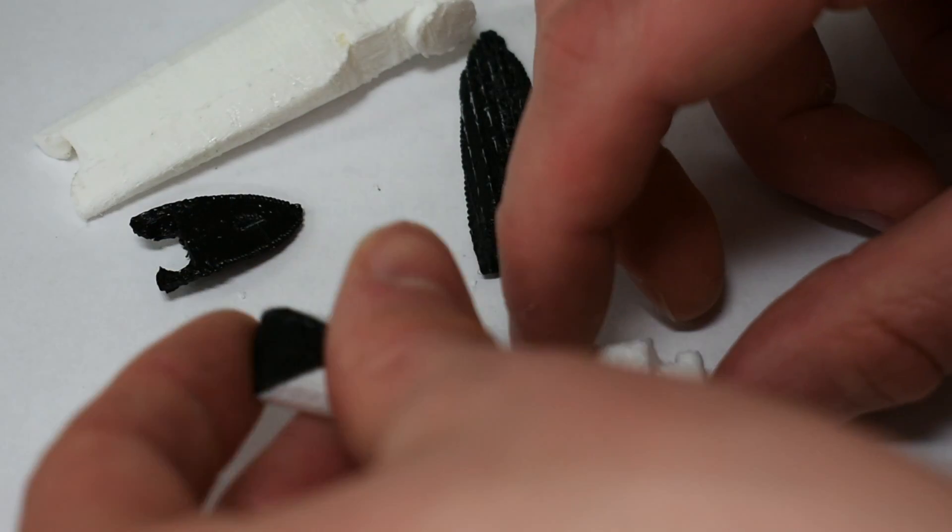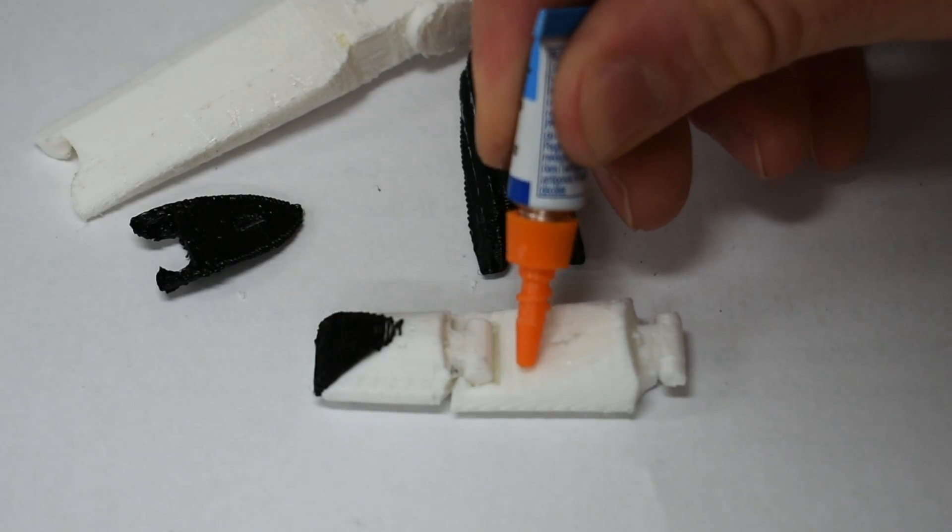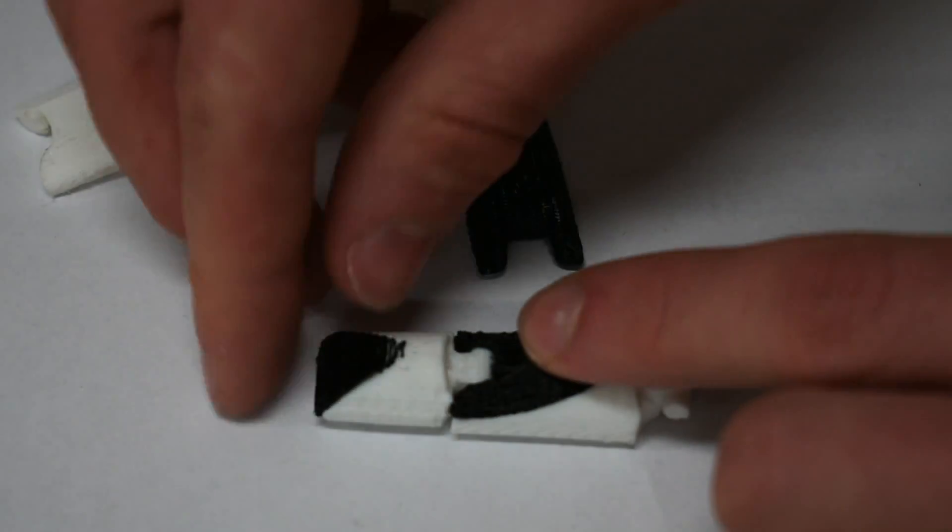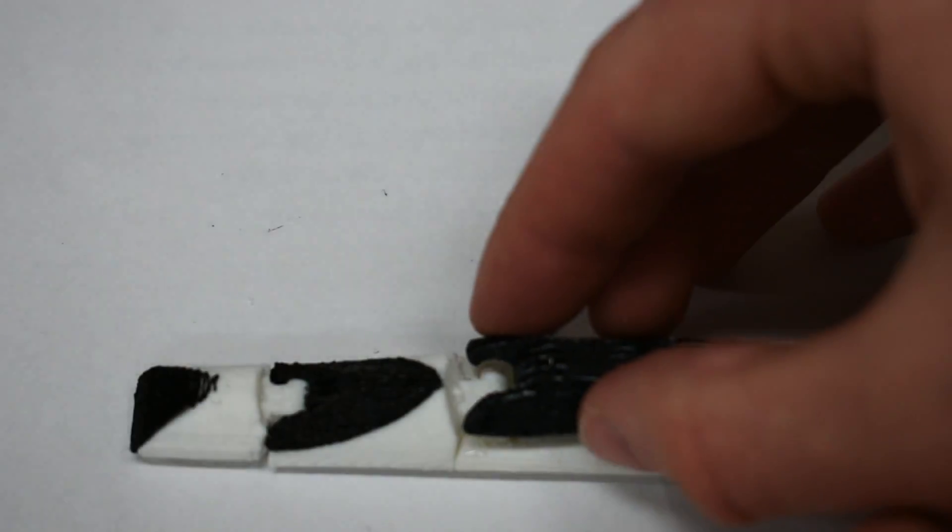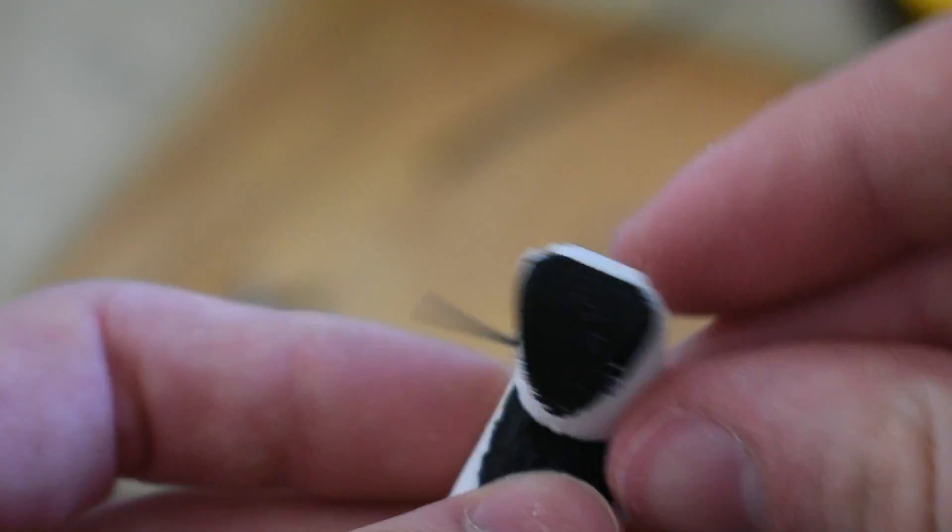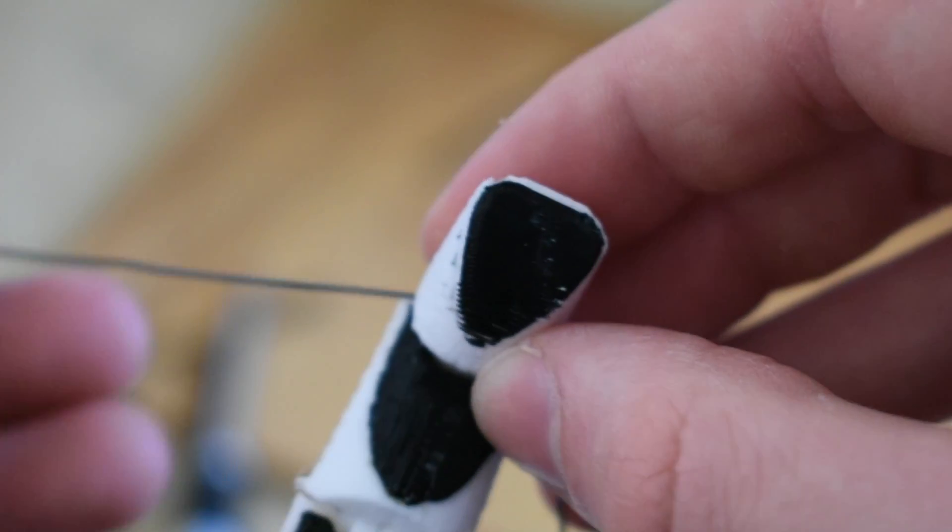Because of small errors made in Fusion 360 and scaling issues, not all the black pieces fit perfectly onto the white pieces. A key problem of this being that some of the joints don't roll as smoothly as they should. Additionally, some of the holes are too small in diameter for the elastic.